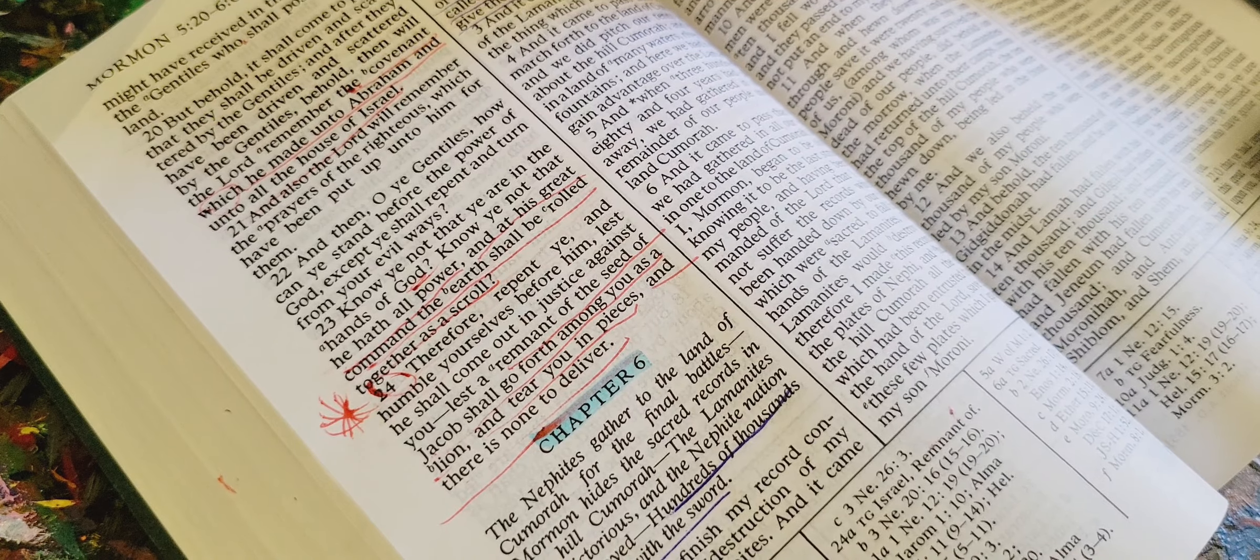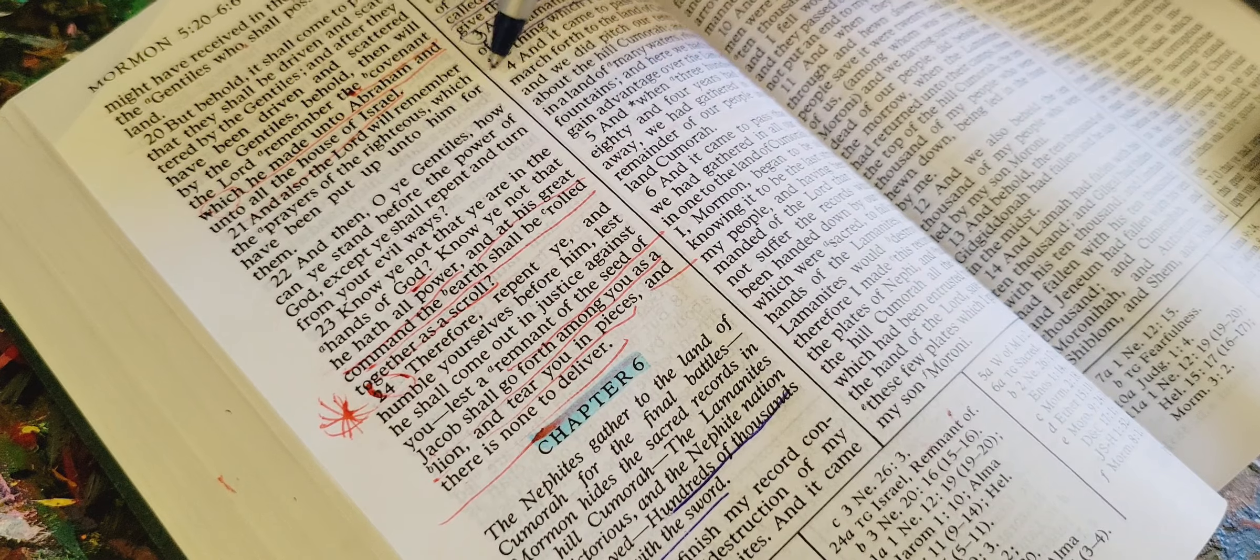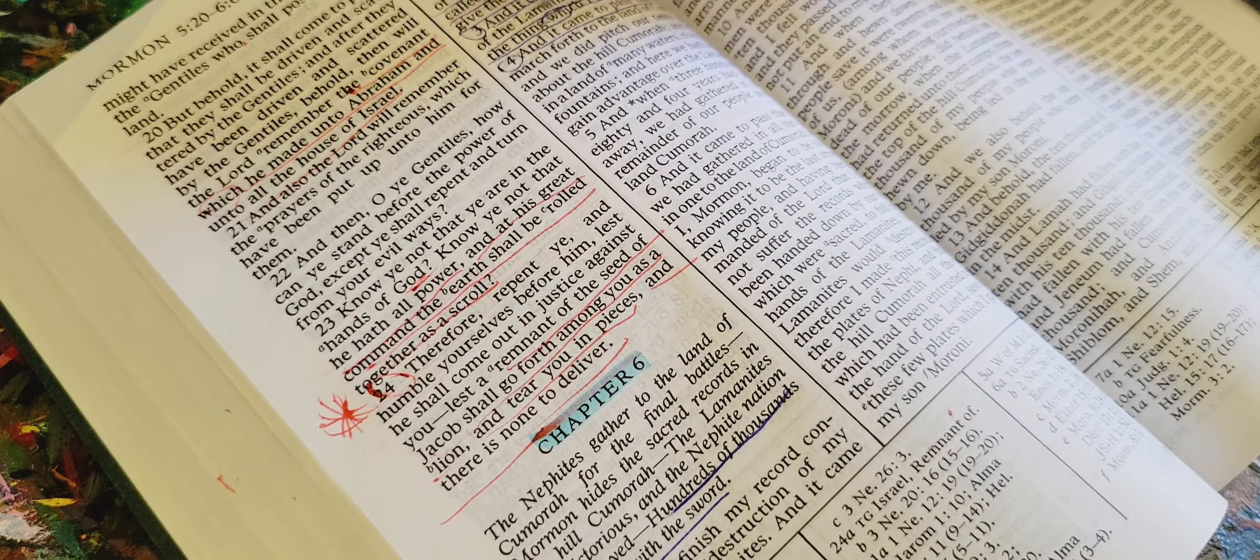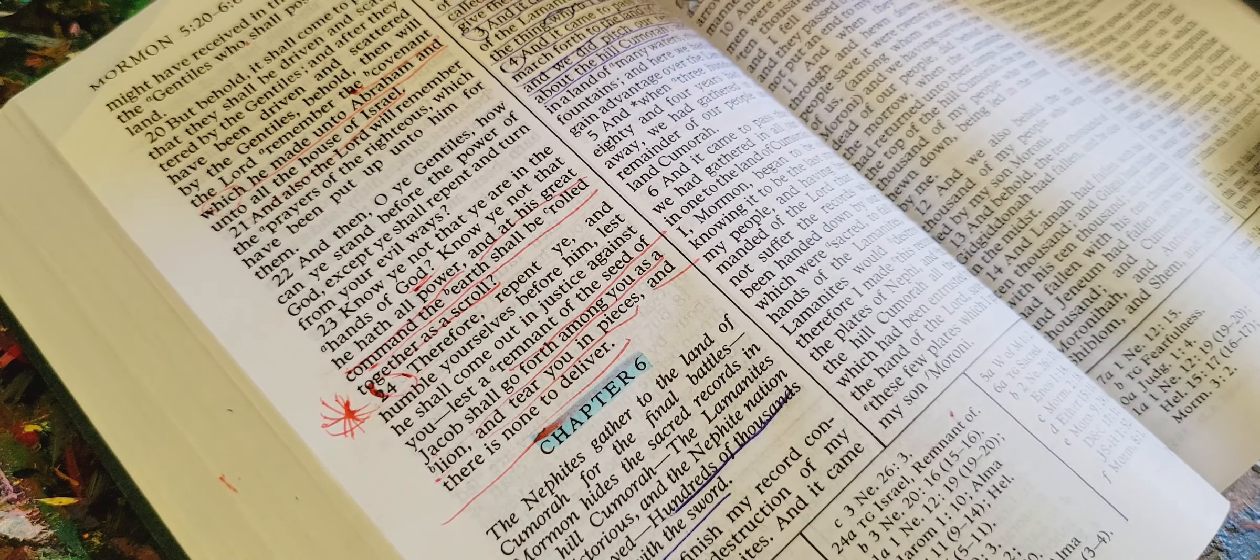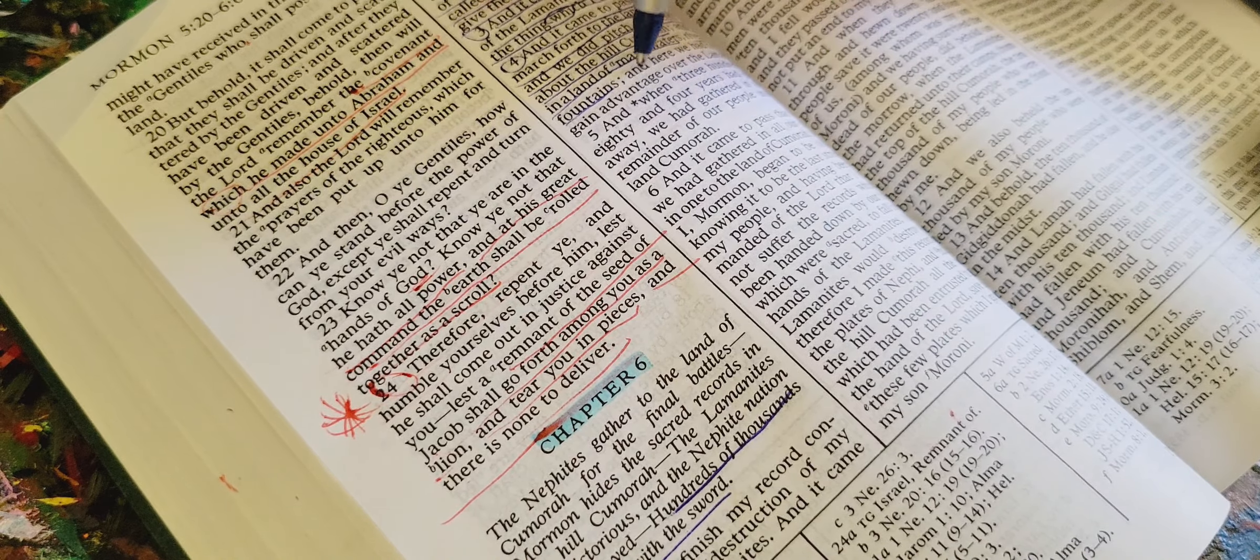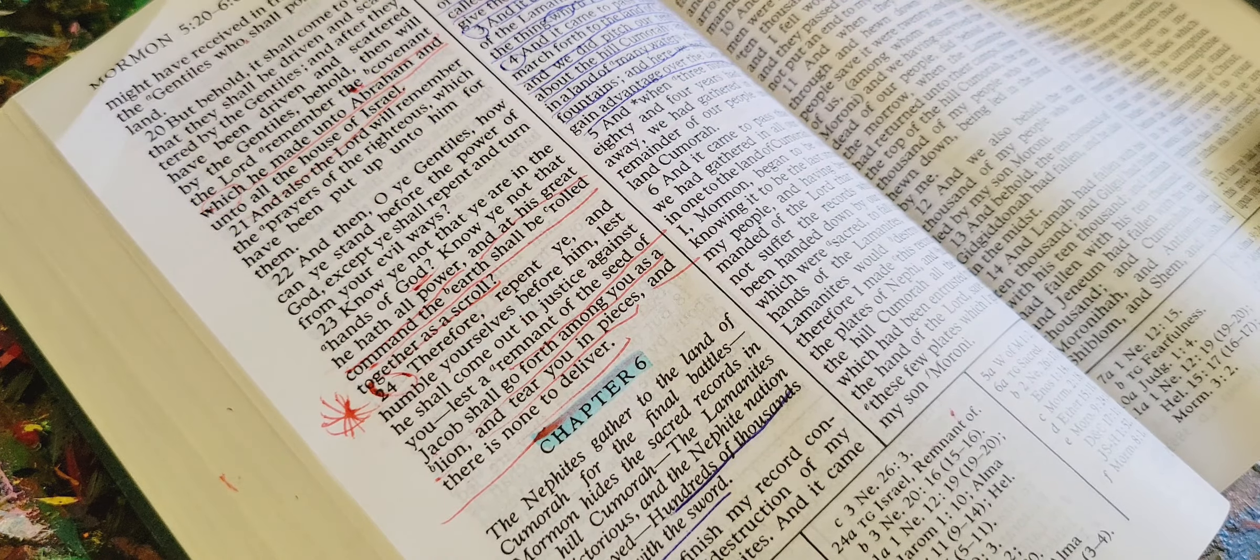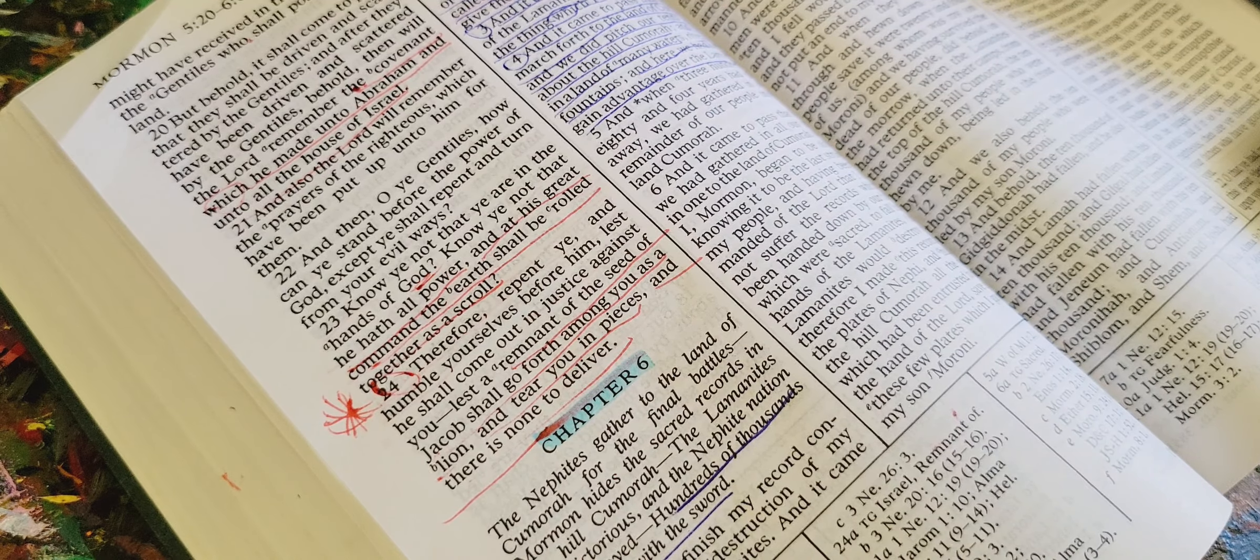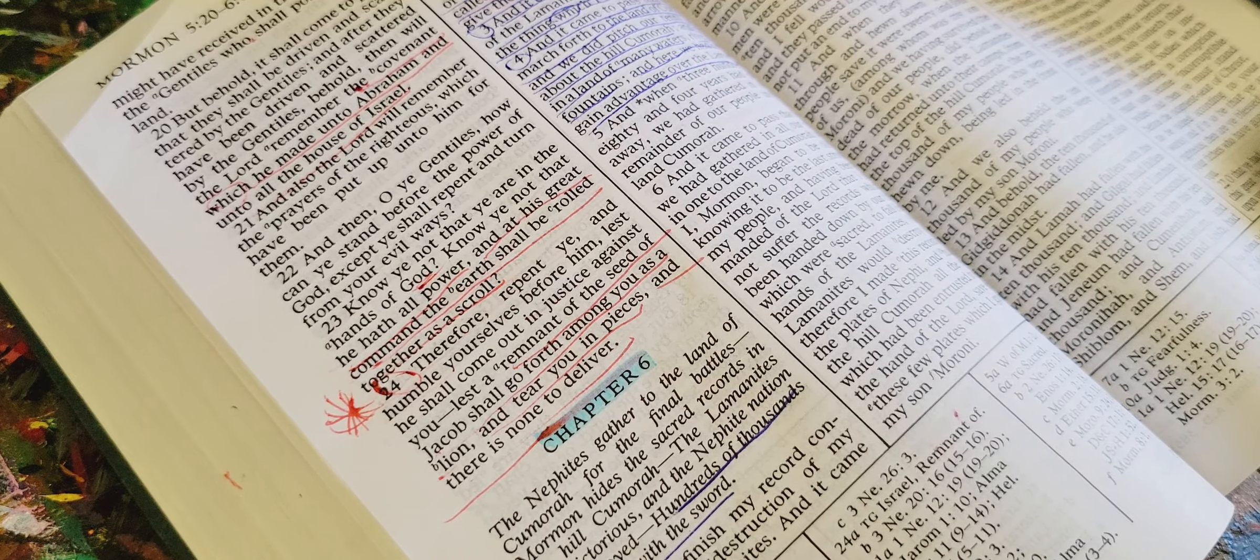And it came to pass that the king of the Lamanites did grant unto me the thing which I desired. And it came to pass that we did march forth to the land of Kumora, and we did pitch our tents round about the hill Kumora. And it was in the land of many waters, rivers, and fountains, and here we had hopes to gain advantage over the Lamanites. And when three hundred and eighty and four years had passed away, we had gathered in all the remainder of our people unto the land of Kumora.